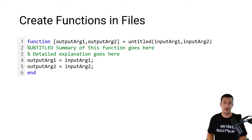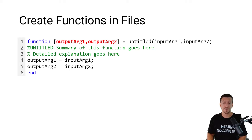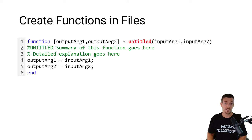Before we head over to MATLAB, let's take a look at the syntax of a function. The first line is known as the function definition line, which begins with the keyword function. Next we have a comma-separated list of the output arguments of the function enclosed in square brackets. On the right-hand side, we have a comma-separated list of the input arguments to the function enclosed in parentheses. The last item on this line is the name of the function, which will also serve as our file name.